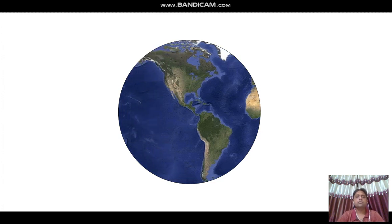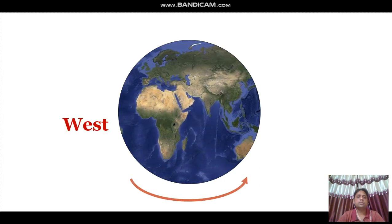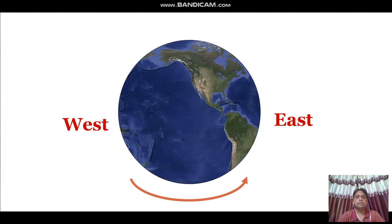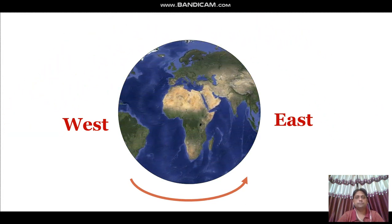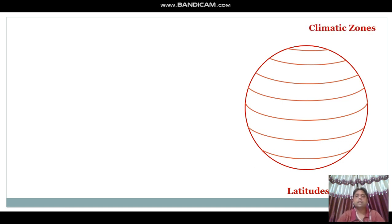The Earth is rotating on its own axis, and its direction of rotation is from west to east. Due to that reason, the Sun rises in the east and sets in the west. Now we need to know some facts regarding latitudes and longitudes. Latitudes are horizontal imaginary lines running on the surface of the Earth, helpful for understanding different climatic zones.